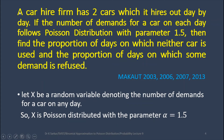Here is a question: a car hire firm has two cars which it hires out day by day. If the number of demands for a car on each day follows Poisson Distribution with parameter 1.5, then find the proportion of days on which neither car is used and the proportion of days on which some demand is refused. Let us take x as the random variable denoting the number of demands for a car on any day, and x follows Poisson Distribution with parameter alpha equal to 1.5.